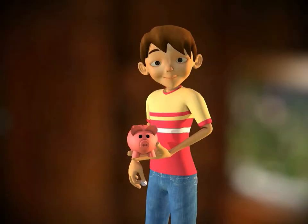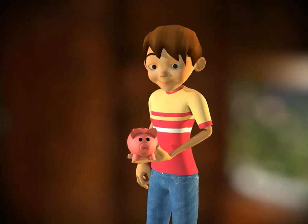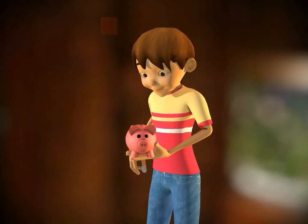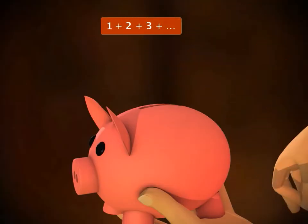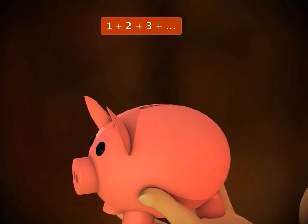Sam's father wants Sam to learn the importance of saving money. He gave Sam a piggy bank and some money to store. He gave Sam 1 rupee on day 1, 2 rupees on day 2, 3 rupees on day 3, and so on for a month that had 30 days.